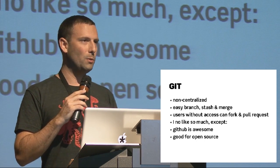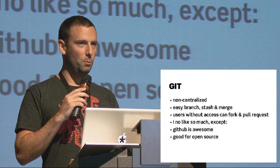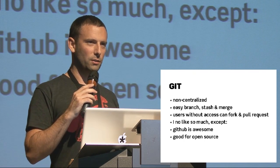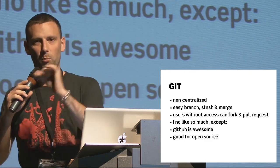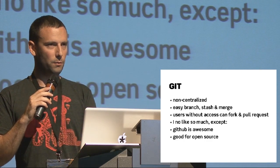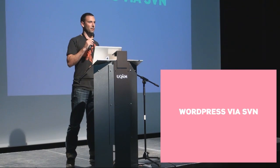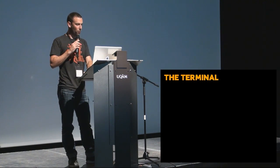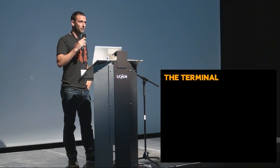We have a bit of a weird situation where we do some open source stuff that's on GitHub and on the WordPress plugin repository, which is a bit awkward. We like working on GitHub, but eventually you have to push onto the public plugin repo on WordPress.org, and we just have it duplicated — we don't have a good solution. WordPress uses SVN, though. I like SVN. Did I mention that?